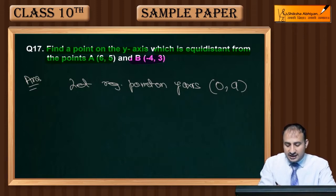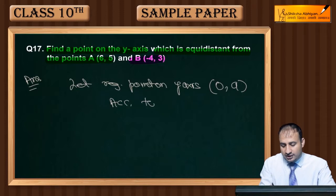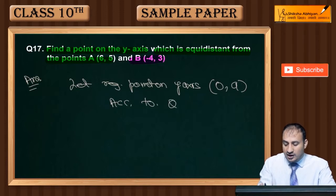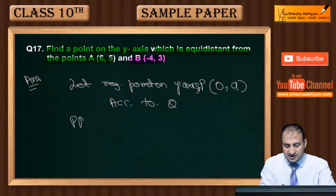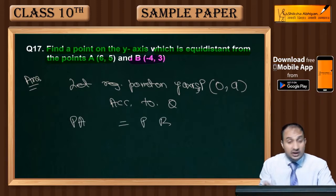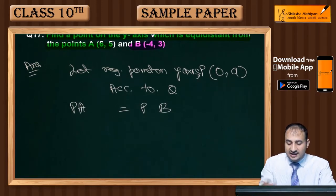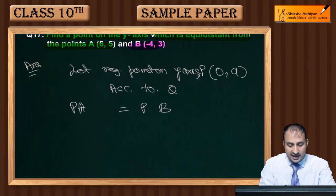According to the question, the point is P, so PA is equal to PB - this will be equal distance. If we look at the points, let one coordinate be x2, y2, and P's coordinate be x1, y1.